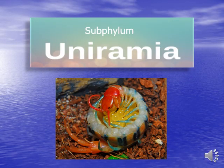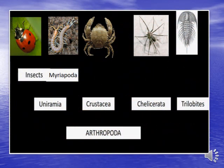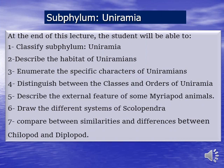Our lecture is about Subphylum Uniramia. 'Uni' means single, 'ramia' means branch. Subphylum Uniramia includes all arthropods with unbranched appendages. Insects and Myriapoda are examples of Uniramia, which belongs to Phylum Arthropoda.